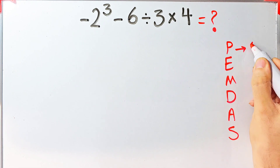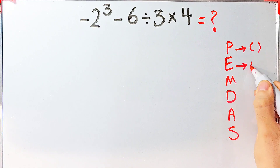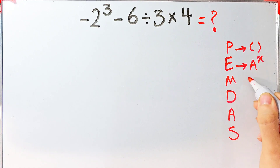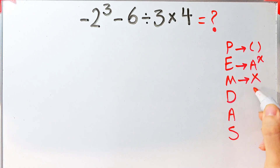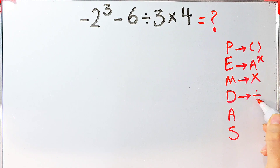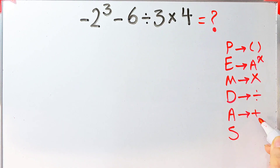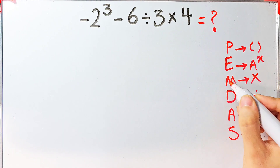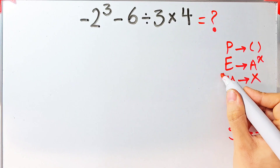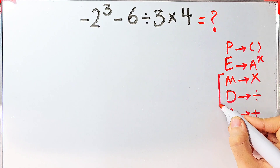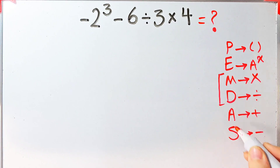In this rule, P stands for parentheses, E stands for exponent, M stands for multiplication, D stands for division, A stands for addition, and S stands for subtraction. Multiplication and division have the same level of priority, and addition and subtraction also have the same level of priority.